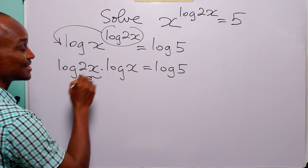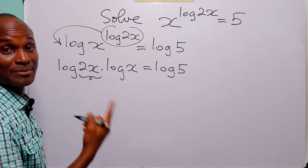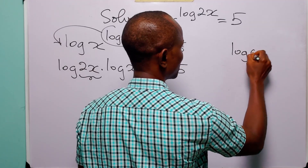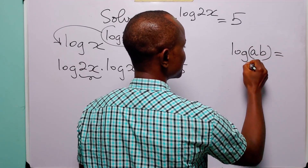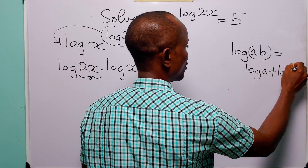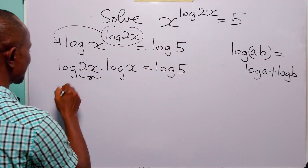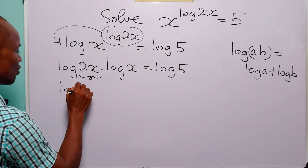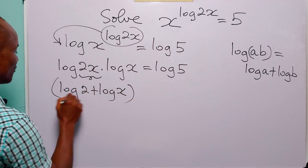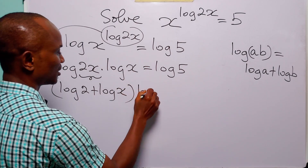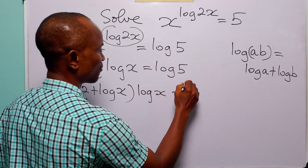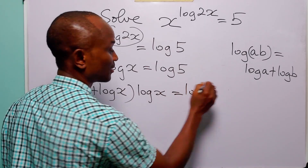Now you can see that this is a product. Of course, you know that 2x is 2 times x. Remember that when we have log ab, this is equal to log a plus log b. So log 2x can be expressed as log 2 plus log x. And we still have log x multiplied, and this product is equal to log 5.